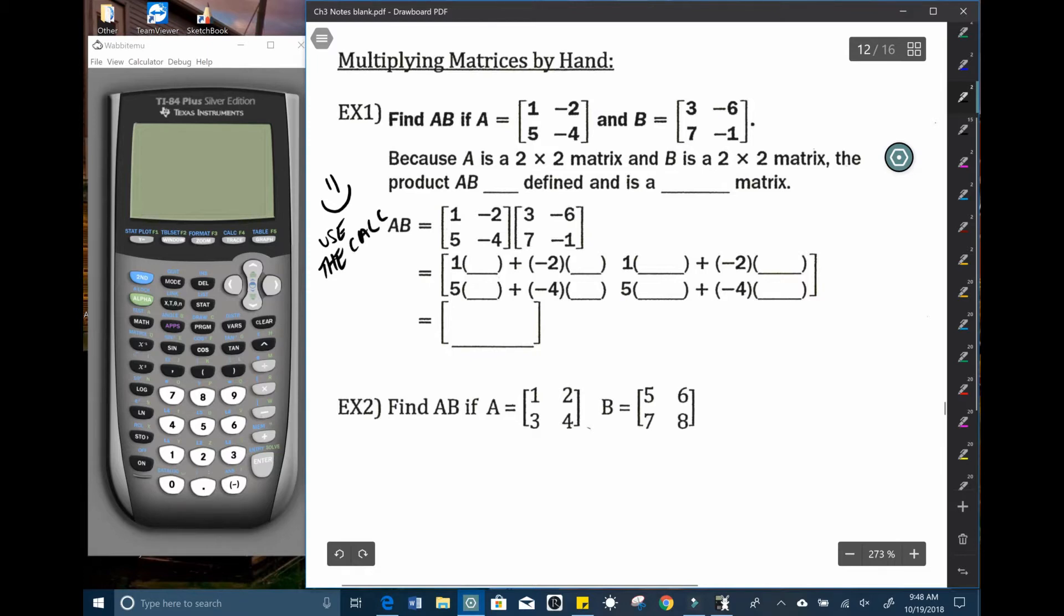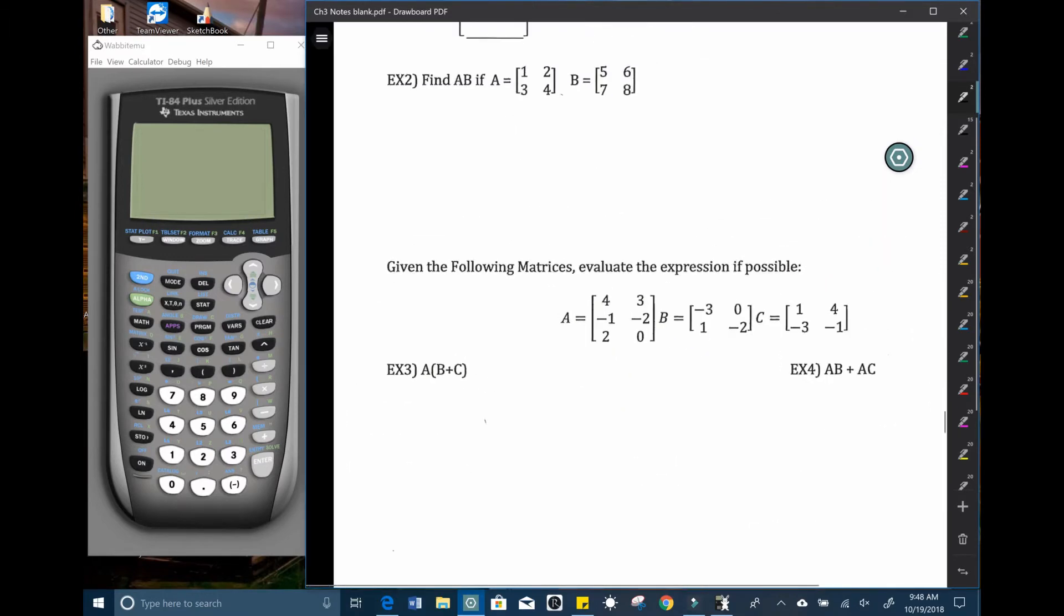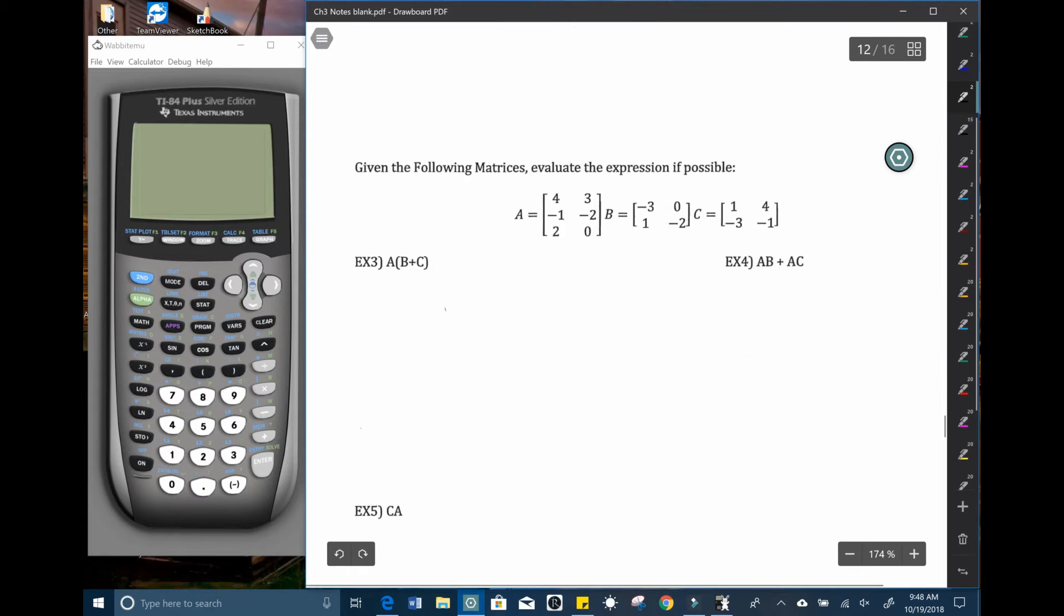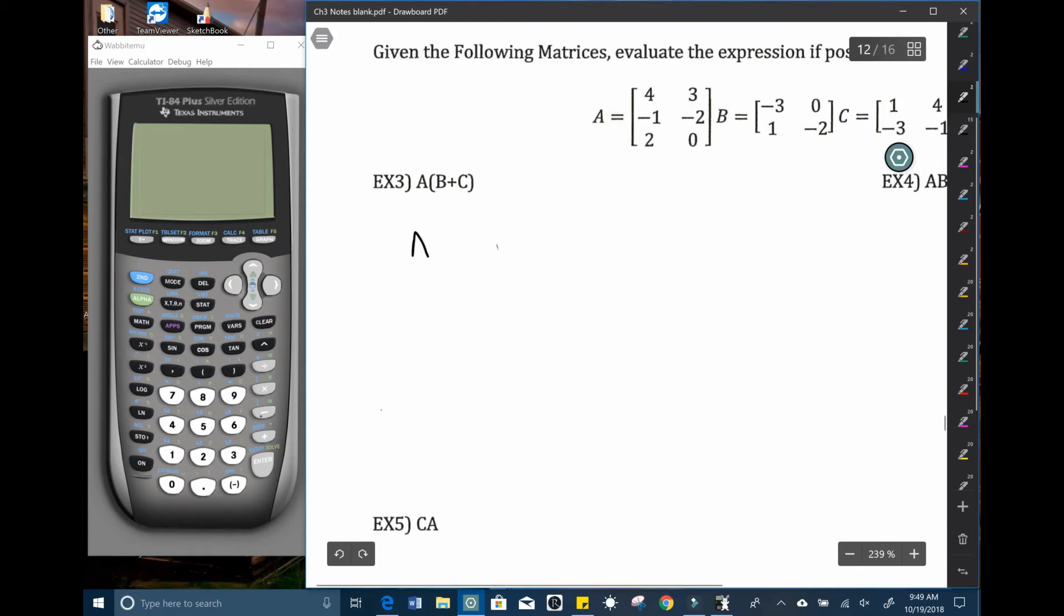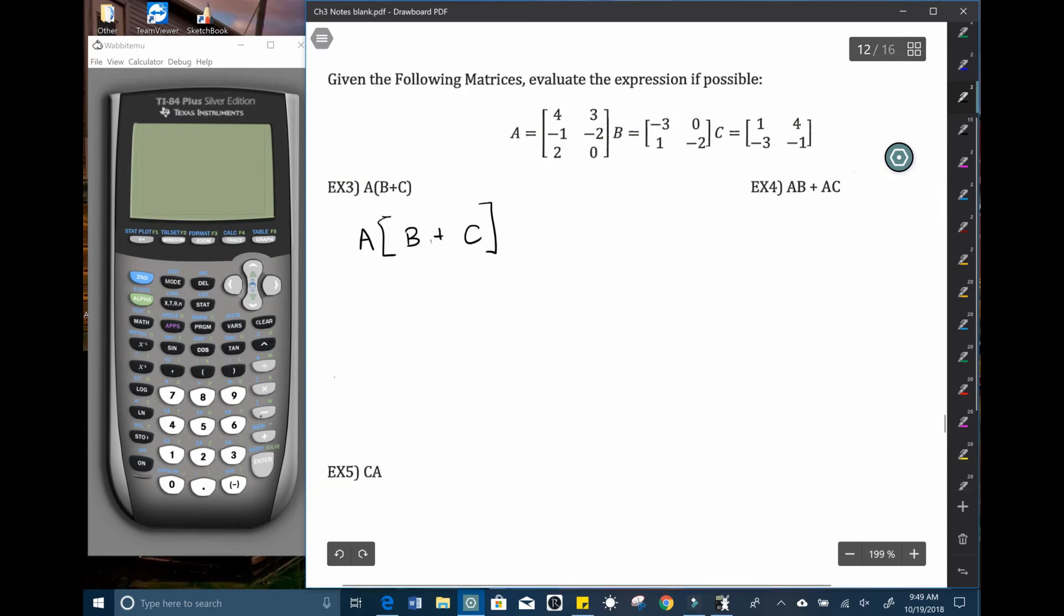Just know that matrix multiplication is not always possible. So the types of problems you will come across are these here. You may be given two matrices and need to multiply them. You might have an order of operations. So for here, you're taking A times the quantity matrix B plus C. You can do all of those in your calculator. If possible. Some of them are not possible. So just type those into your calculator, A, B, and C, and try out these problems.